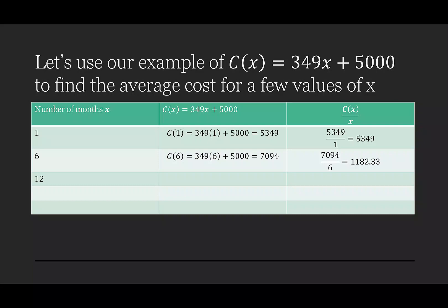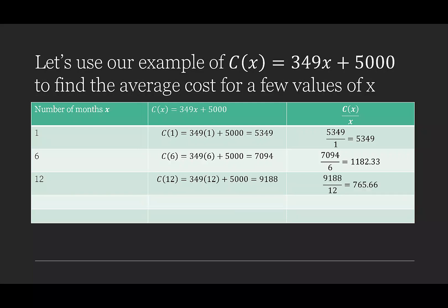Let's make that even bigger and go to a year. So after 12 months, we've paid 349 times 12 plus our down payment of 5,000, which is a total of $9,188. Dividing that by 12 says we've paid on average $765.66 per month. Let's try that two more times.